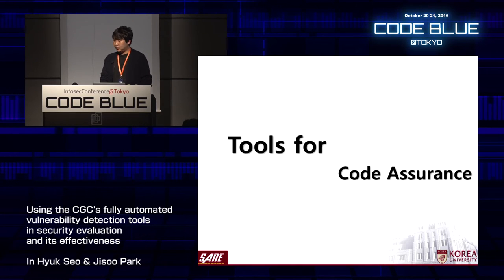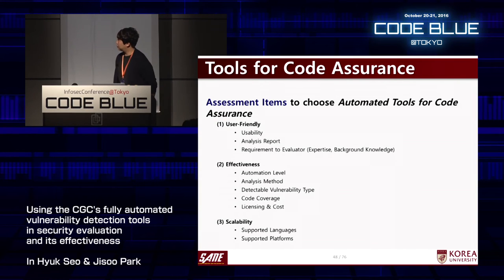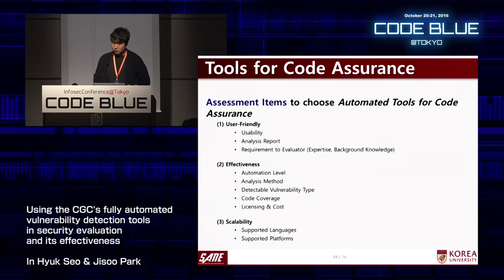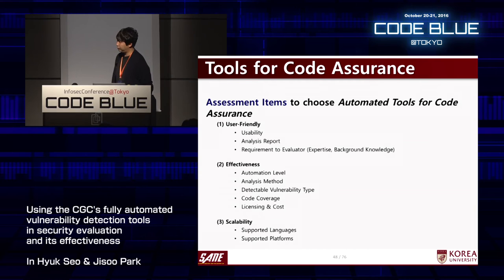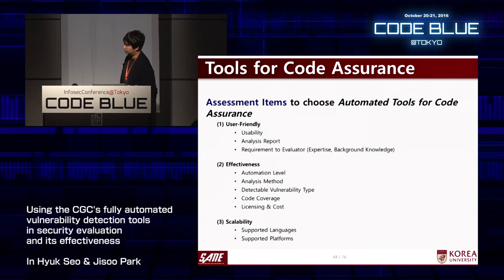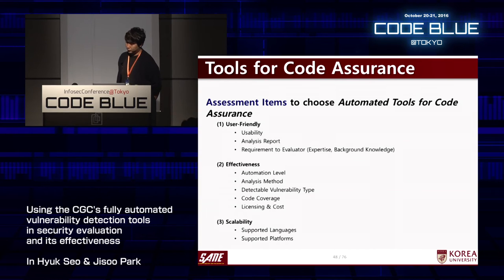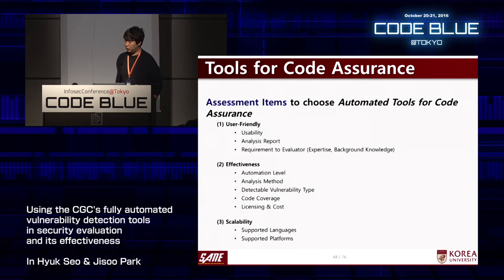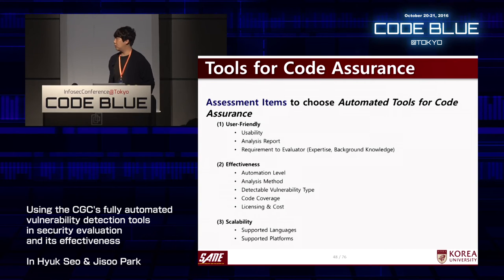Now let's talk about code-level automated tools. Assessment items for code assurance include: analysis method — the technique and tool attribute for code assurance, such as static analysis or binary analysis; detectable vulnerability type — the type of vulnerability the tool can detect; code coverage — a measure of how much of the program code is executed when a tool runs, which increases over time in modern tools; and supported language — such as C, C++, Java, or binary.